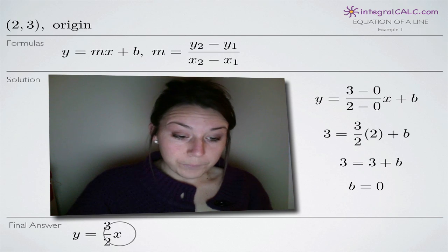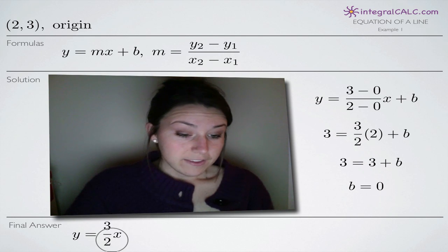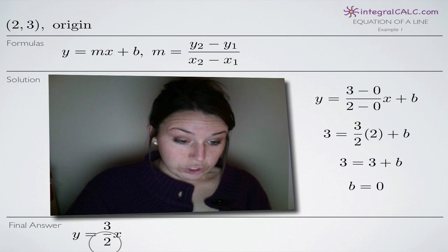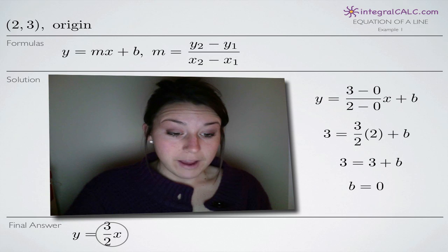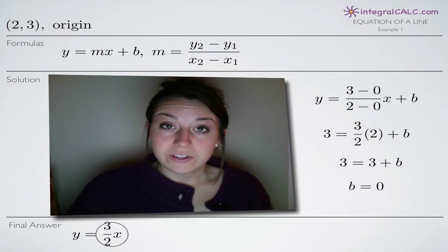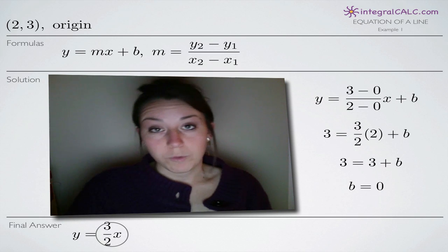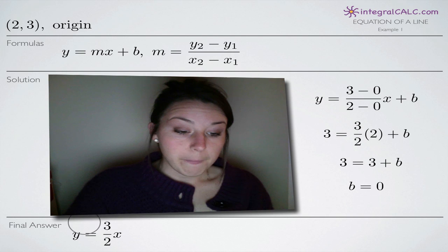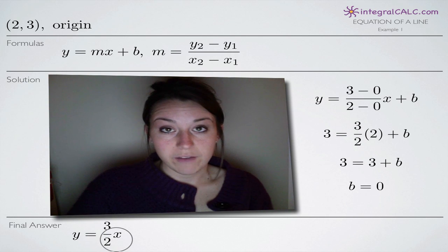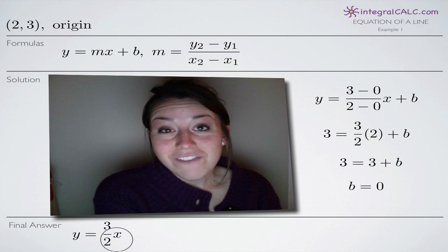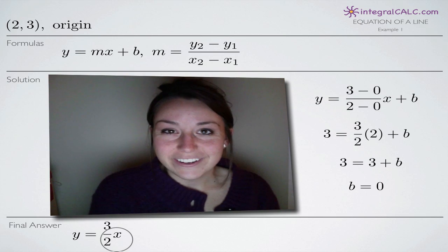You can leave it in this form. You could simplify by multiplying both sides by 2 to get 2y equals 3x or move the variables onto one side. It doesn't really matter unless you're asked specifically for slope-intercept form or point-slope form, but we'll leave our equation as y equals an equation in terms of x. I hope that video helped you guys and I'll see you in the next one.